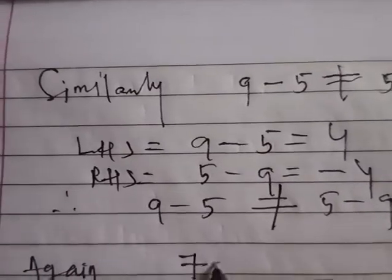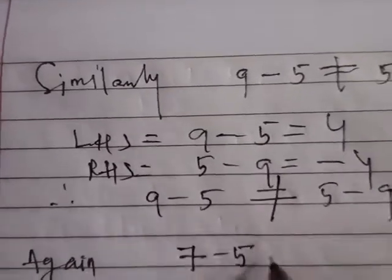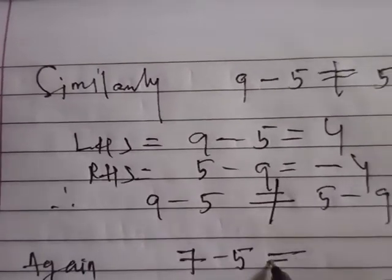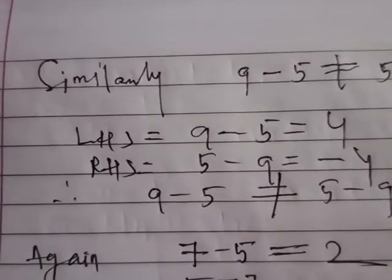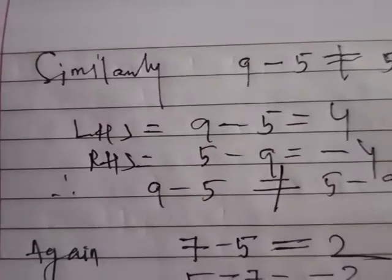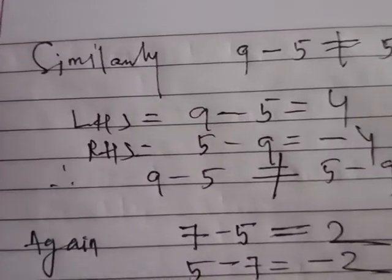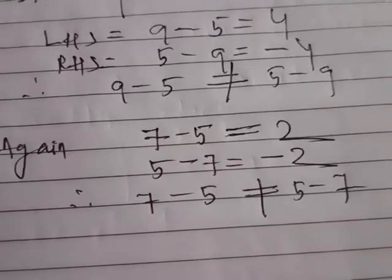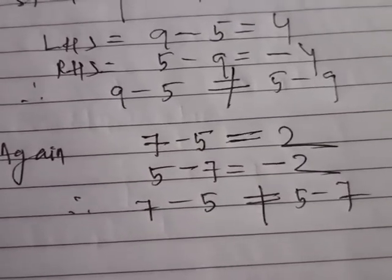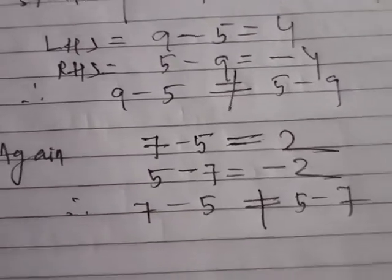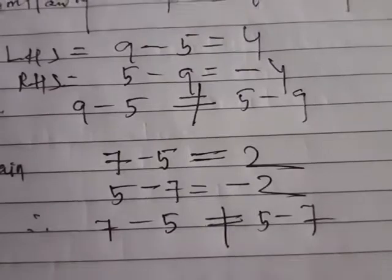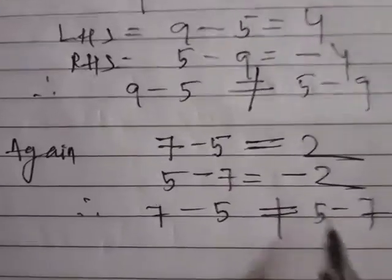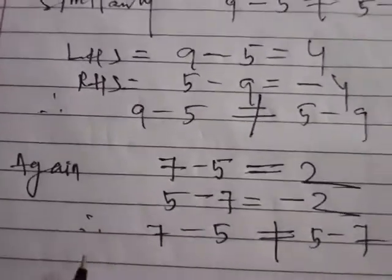Again, 7 minus 5 equals 2, and 5 minus 7 equals minus 2. Hence 7 minus 5 is not equal to 5 minus 7. Also note that minus 2 does not belong to the set of whole numbers — whole numbers are 0, 1, 2, 3 etc. Minus 2 belongs only to integers. We are discussing properties of whole numbers.